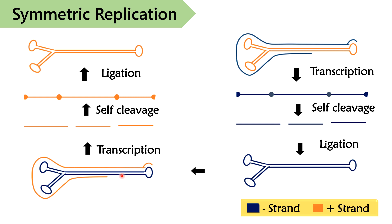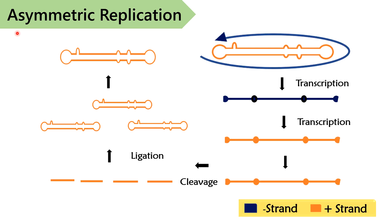This minus strand is copied by RNA polymerase to produce a concatemeric plus strand. After that, the self-cleavage of the plus strand will produce a positive monomer strand. This monomer subunit will get ligated and form plus circular RNA.